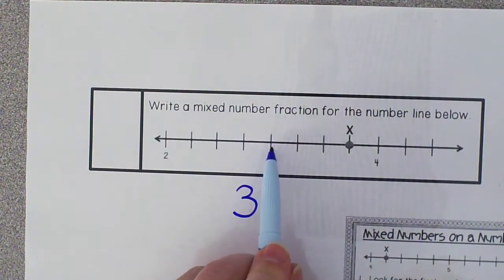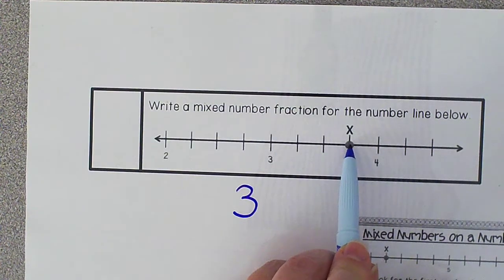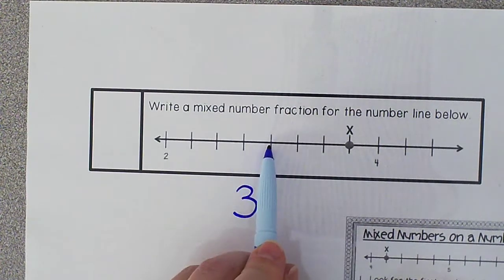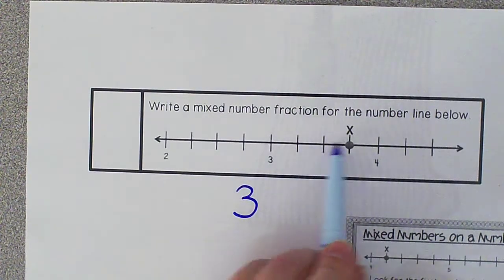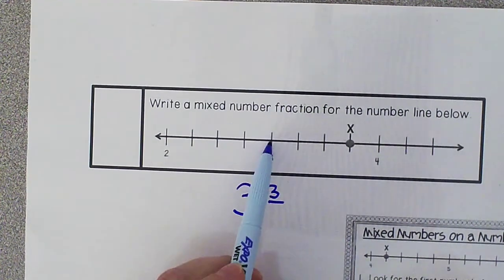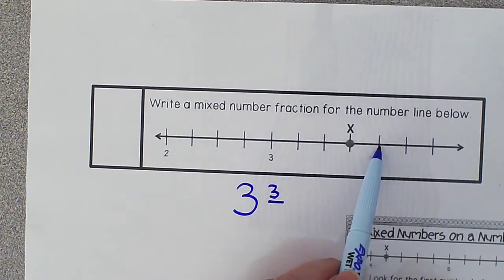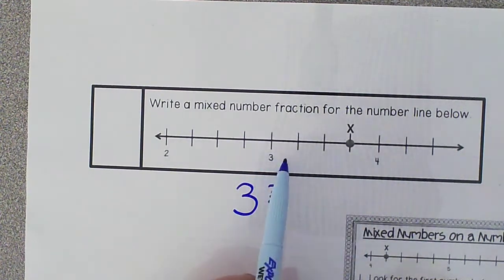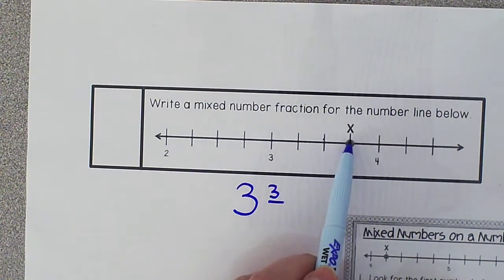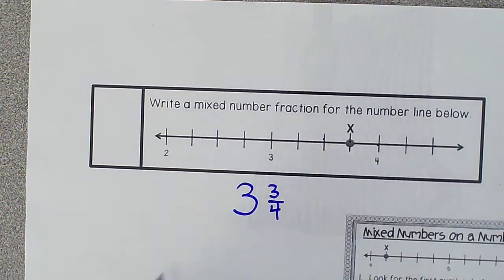Now, I need for you to come up with a fraction for this point. So we're going to count over. 1, 2, 3. My numerator is a 3. Now we're going to count from the 3 until the 4. We have to find out how many marks in between. So 1, 2, 3, 4. My denominator is a 4. So our mixed number for this number line is 3 and 3 fourths.